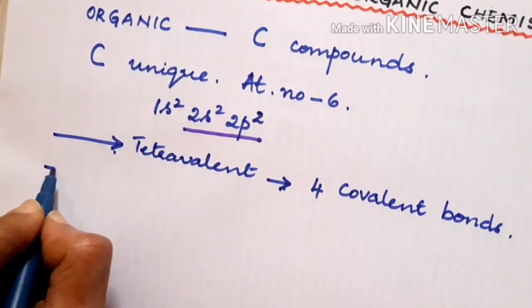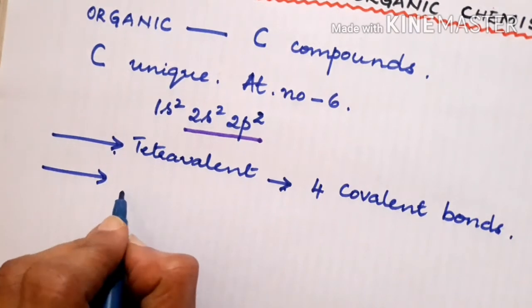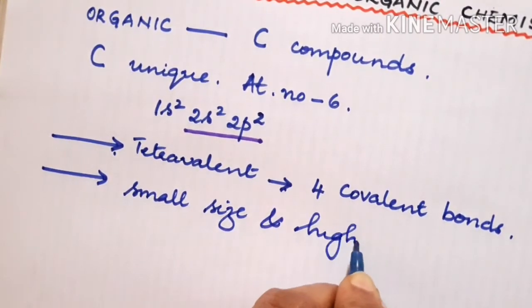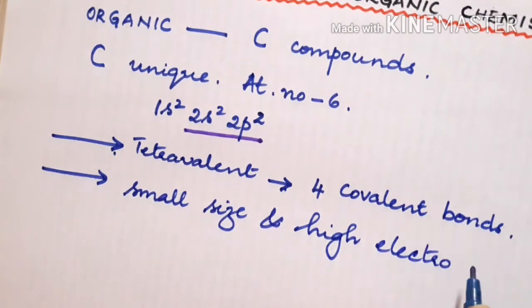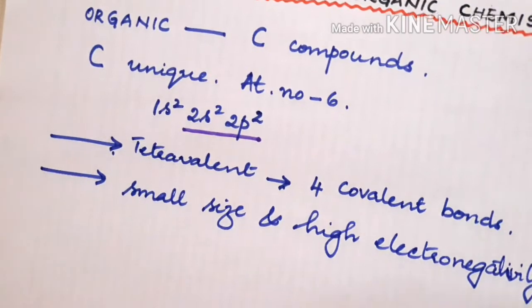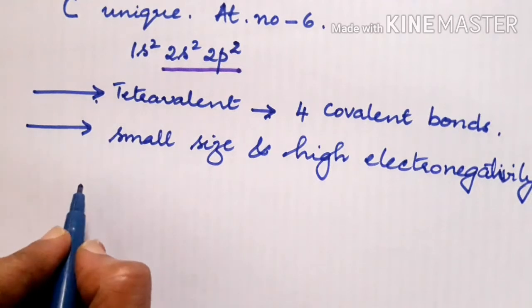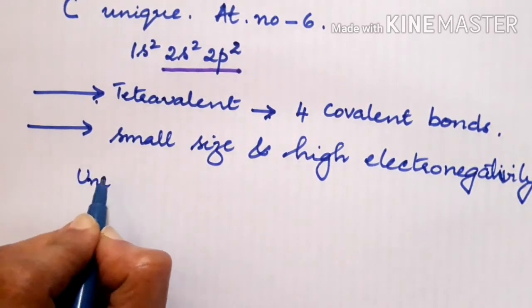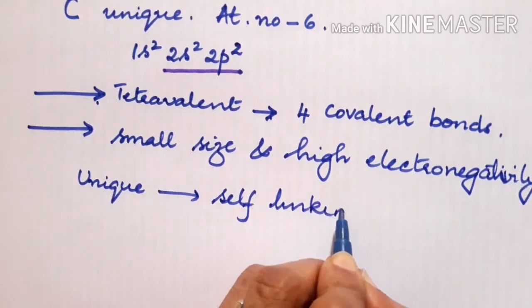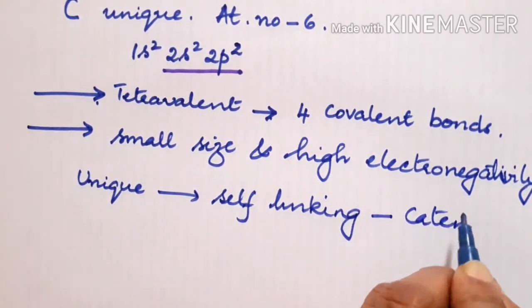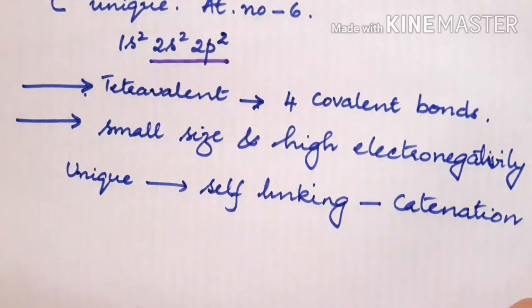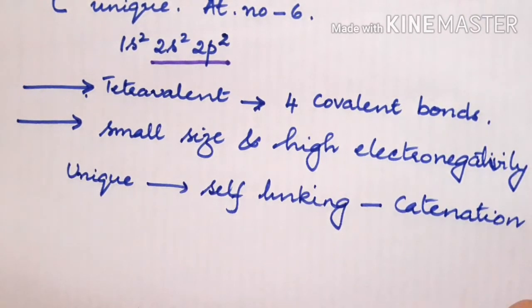Second thing is carbon, due to its small size and high electronegativity compared to the other elements in the group, has a unique property of self-linking. This self-linking property is known as catenation, due to which carbon can form a variety of long chains as well as rings.